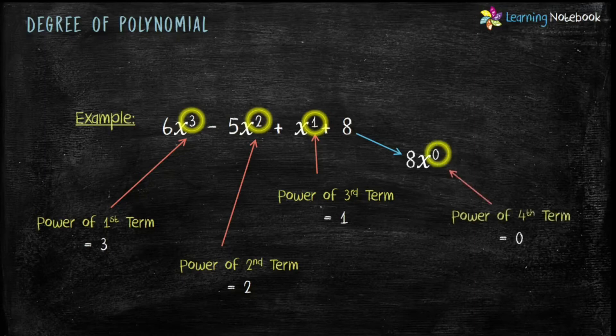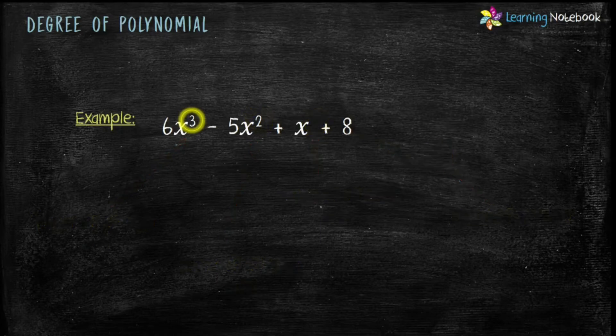Now we know all the powers of variable x in this polynomial. The highest power of x is 3. Therefore, the degree of this polynomial is 3.